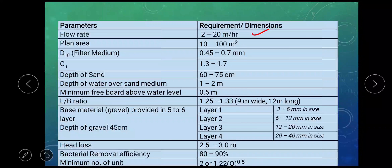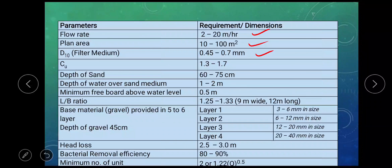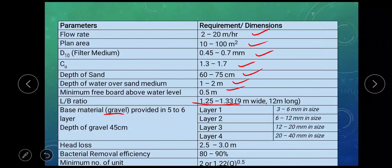Surface area for rapid sand filter may vary from 10 to 100 square meter; however, this value for the slow sand filter may range from 100 to 2000 square meter. Effective size of the sand grain may vary from 0.45 to 0.7 millimeter; however, for the slow sand filter this value may vary from 0.2 to 0.35 mm. Coefficient of uniformity may vary from 1.3 to 1.7. Depth of the sand may vary from 60 to 75 centimeter. Depth of water over sand layer may vary from 1 to 2 meter. Freeboard of 0.5 meter is provided. Length to width ratio may vary from 1.25 to 1.33. Base material, that is gravel, may be provided in 5 to 6 layers for good distribution of wash water.